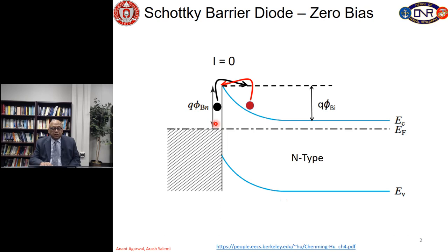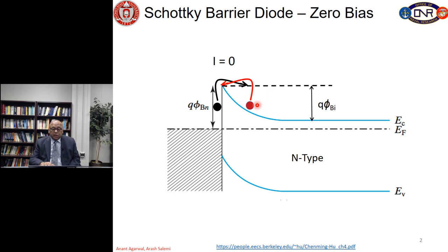There are two barriers shown here. One is for an electron to leave from the metal over this barrier to the semiconductor, shown by the black arrow, and that barrier is φ_BN — φ_B for barrier, N for N-type semiconductor. This barrier is determined by the metal work function and the electron affinity in the semiconductor. The second barrier is φ_BI, the initial barrier, seen by electrons leaving from the semiconductor over this barrier going to the metal side.